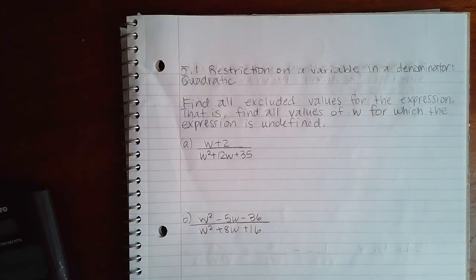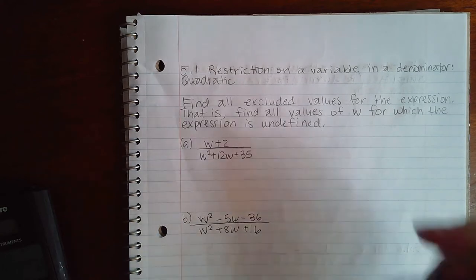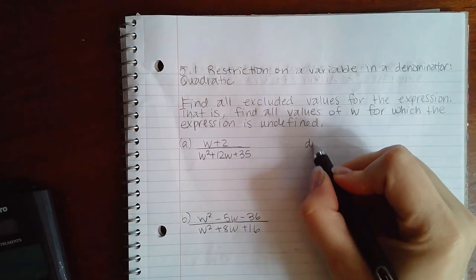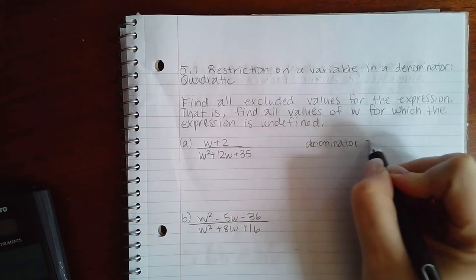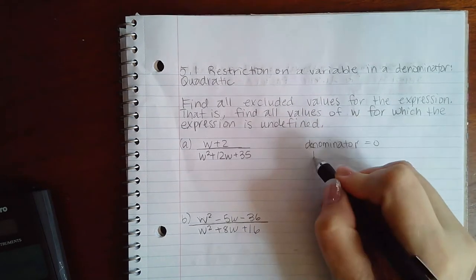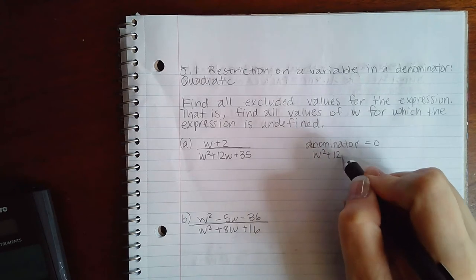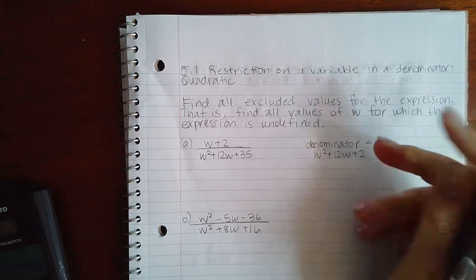Here we have 5.1 Restriction on a Variable in a Denominator Quadratic. Find all excluded values for the expression. That is, find all values of W for which the expression is undefined. We know that fractions are undefined when those denominators equal zero, so what we're going to do is take that denominator and equal it to zero.